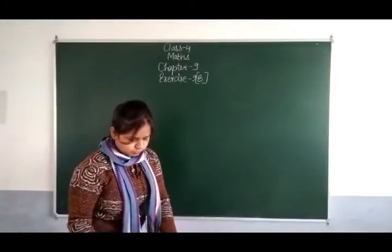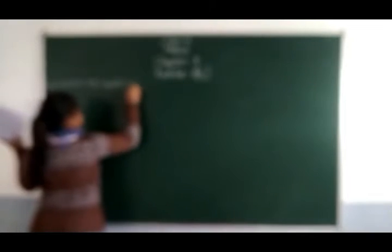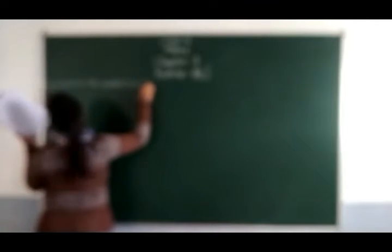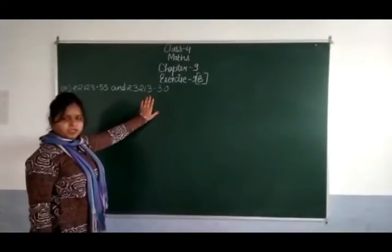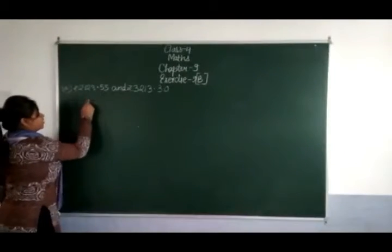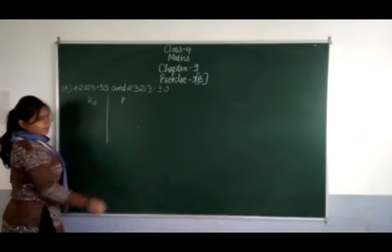We will add the following amounts. We will add 2,123 rupees and 50 paise, and 3,213 rupees. We will add two amounts. Rupees is one column and paise is another column.